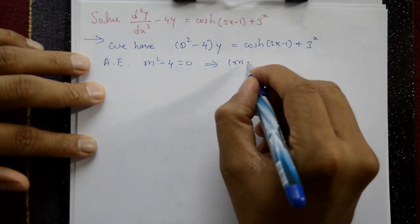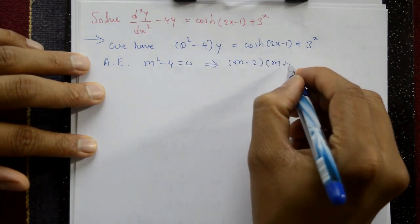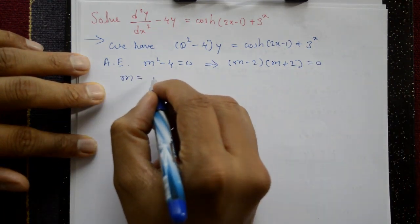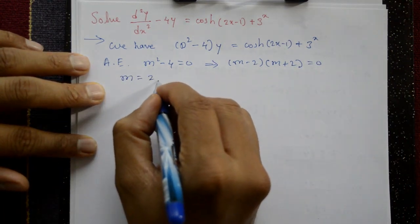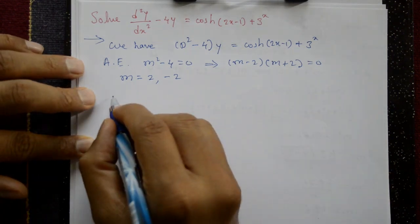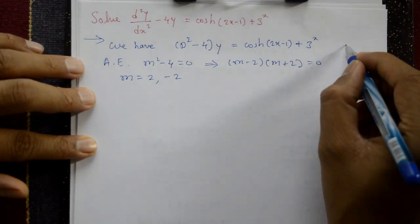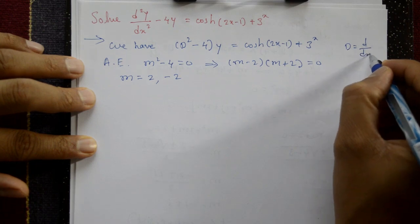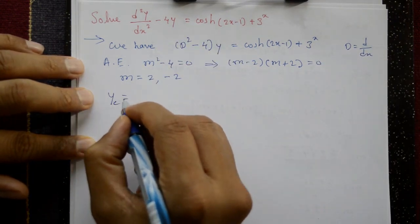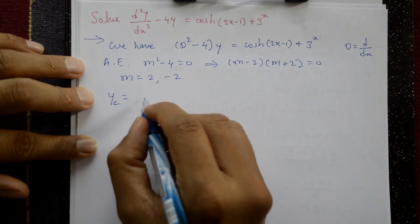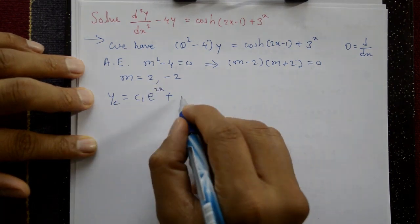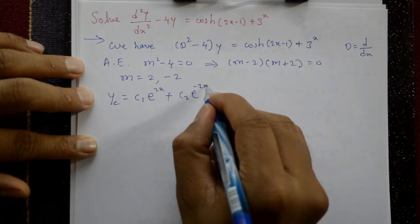The auxiliary equation is m² - 4 = 0, factoring as (m - 2)(m + 2) = 0. The roots are m = 2 and m = -2. The complementary function is yc = c₁e^(2x) + c₂e^(-2x).